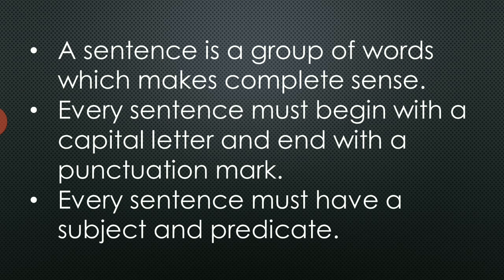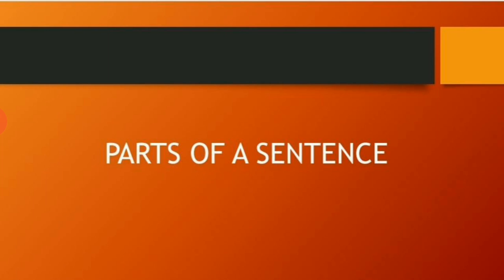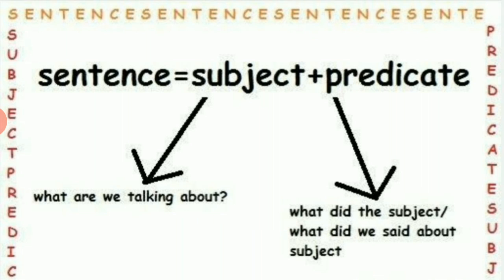Every sentence must have a subject and a predicate, and these are the two parts of a sentence. The universal structure of a sentence is: subject plus predicate. Subject is that part of a sentence which names the person or thing we are speaking about. And predicate is that word or part of a sentence which says something about the subject.